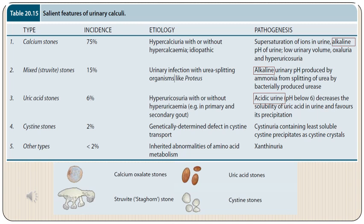Uric acid stones are about 6 percent of total stones and occur in patients with hyperuricosuria with or without hyperuricemia, which can be primary or secondary. These stones form in acidic urine because uric acid has lower solubility in acidic medium. Less common ones are cystine stones occurring in patients with genetic defects of cystine transport, and other types with abnormalities of amino acid metabolism constitute less than 2 percent of total stones.